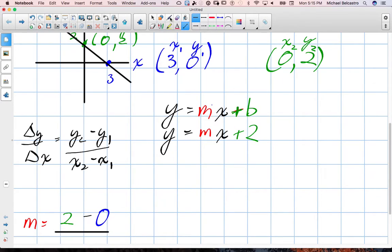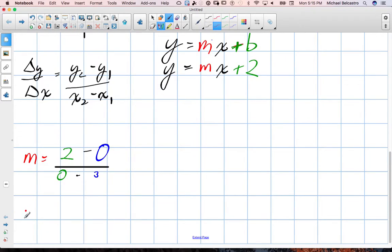So we'll say the slope or m is equal to y2, and it doesn't matter which one's point 1 and which one's point 2. So we'll call this x1, y1 and this x2, y2. So y2 is the value of 2 minus y1 which is the value of 0. And then x2 is 0 minus x1 which is 3. So this one's actually pretty simple. 2 minus 0 is 2, and 0 minus 3 is negative 3.